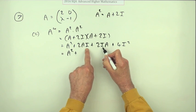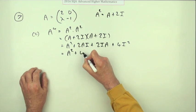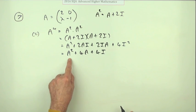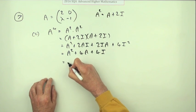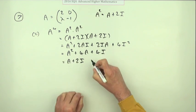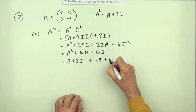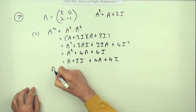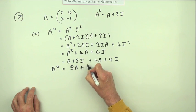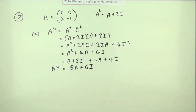But A squared is this, so I've got A plus 2I as well as this part, plus 4A plus 4I. So eventually I get A to the power 4 is 5A plus 6I, and there we go.